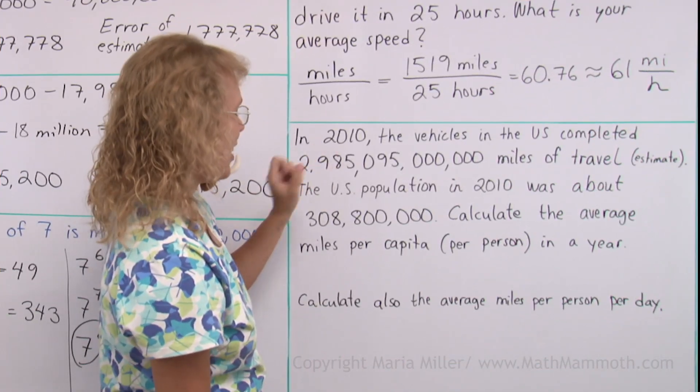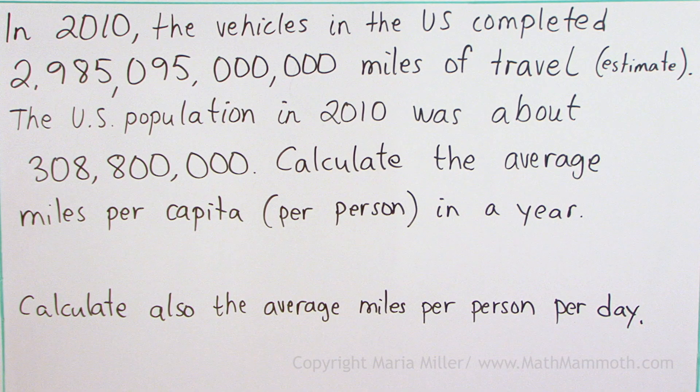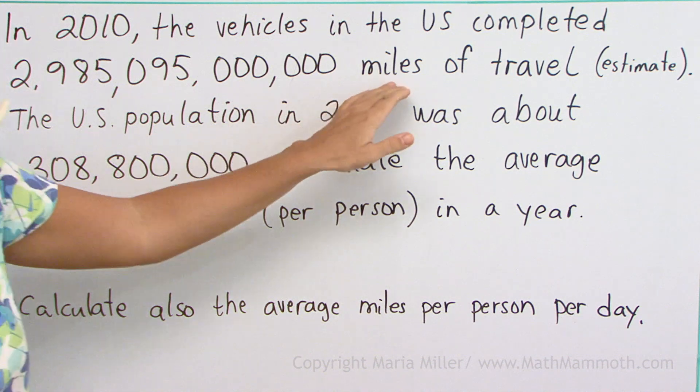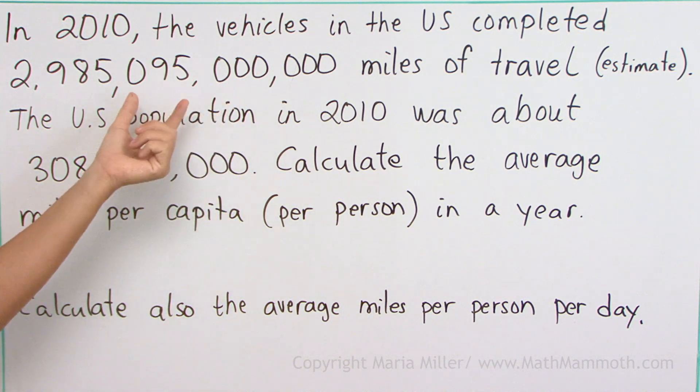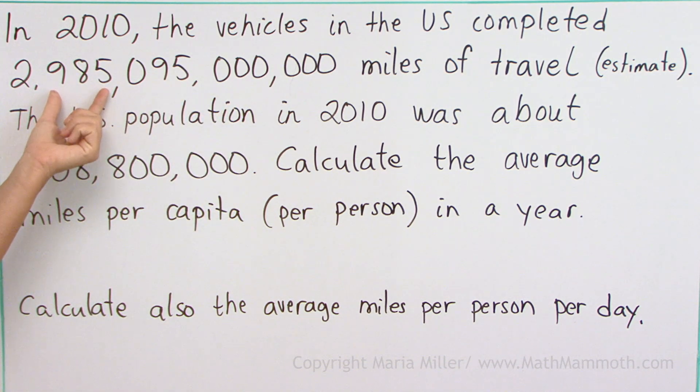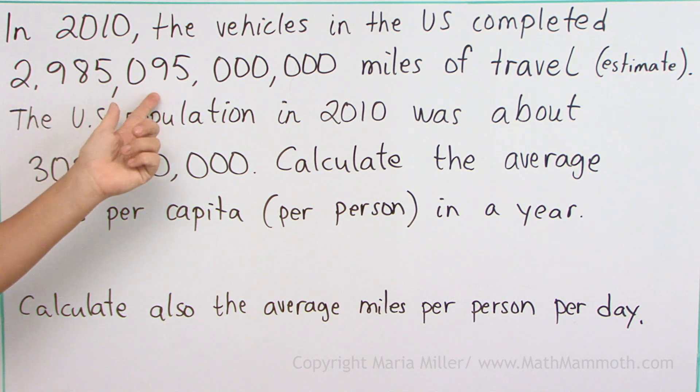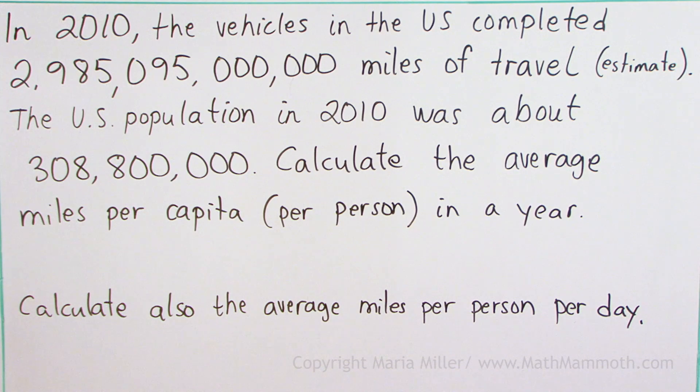In 2010, the vehicles in the United States completed this many miles of travel. It's an estimate. This is a humongous number here. We would have here millions, billions, this is actually in trillions: 2 trillion, 985 billion, 95 million miles of travel.